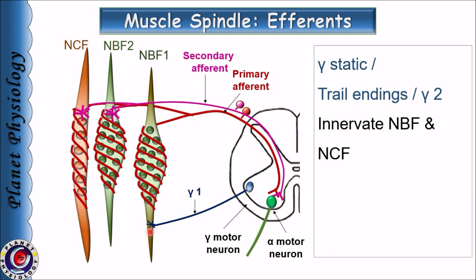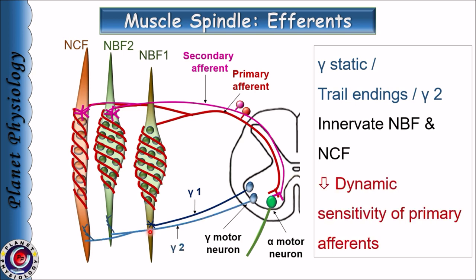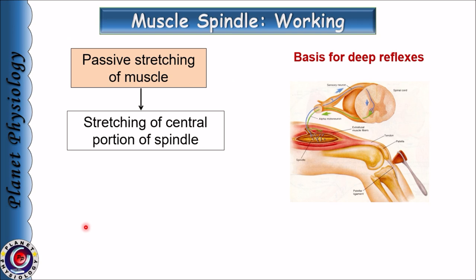The second type is gamma static efferent, also known as gamma 2 efferent. They form trail endings and innervate static nuclear bag fibers as well as nuclear chain fibers. Stimulation of these fibers increases the activity of both primary as well as secondary afferents. It also decreases the dynamic sensitivity of primary afferents and thus plays an important role in sustained contraction of the muscle.